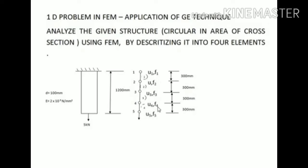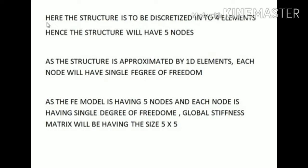F1, F2, F3, F4, and F5 are the forces corresponding to each node. Each element has a length equal to 300 mm. Since the structure is approximated by 1-dimensional elements, each node will have a single degree of freedom. With 5 nodes and single DOF per node, the global stiffness matrix will have size 5 × 5.